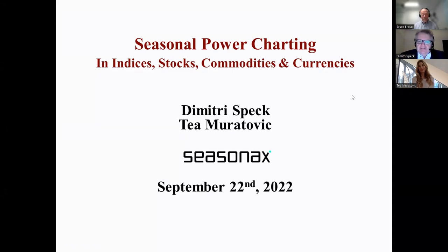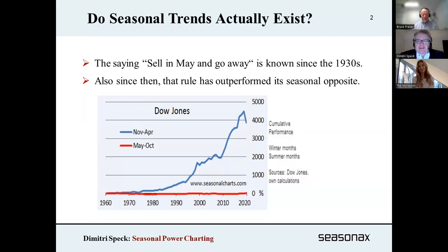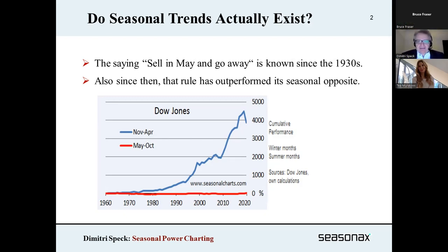Seasonality is often mentioned when it comes to stock indices or commodities, but seasonality also exists in stocks, currencies, and even bonds. Here I show you a very simple example: the blue line is the performance of the Dow Jones in the winter half — from November to April — and in red you see the summer half from May to October. This effect is called the Halloween Effect, also known as 'Sell in May and go away,' a saying known since the 1930s. It has persisted for over 60 years, showing that seasonality has real value and tends to persist over a long period of time.